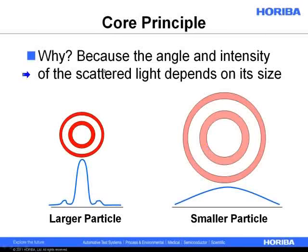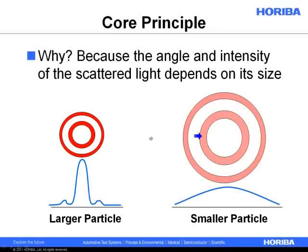We can do this because the angle and intensity of the scattered light depends on that size. Larger particles scatter at narrower angles, which means the target is a little bit smaller, and it also scatters light much more intensely. A small particle scatters over a wider range of angles but also scatters less intensely. That's the fundamental relationship: larger particles scatter at smaller angles and more intensely; smaller particles scatter at wider angles and less intensely.